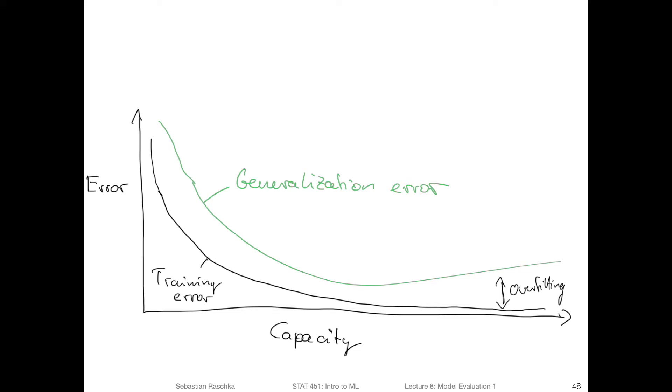And yeah, so what we see here is the error, for example the squared error loss, plotted against the capacity of the model. And we talked about this before—capacity is basically how well the model is capable of fitting a training set. So capacity is basically something like complexity. So the higher the capacity, the higher the capability of the model to fit the data well.